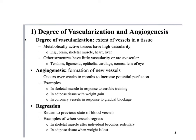The spleen cleans up old red blood cells, so does it have a high degree of vascularity? Yes it does. Blood cells are made in the bone marrow, so bones also have a high degree of vascularity. If you think about the function of tissues — metabolically active tissues need nutrients, oxygen, and materials to do their job — they're going to have lots of blood vessels.